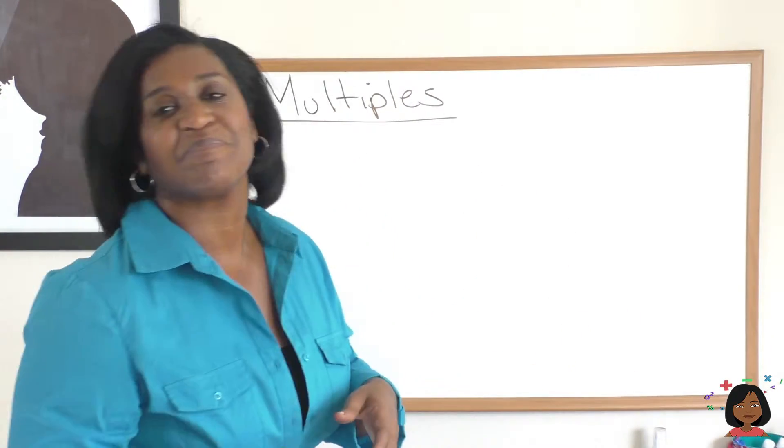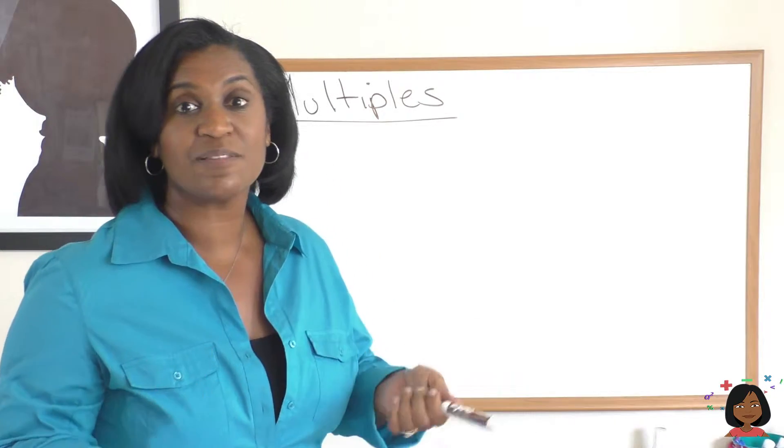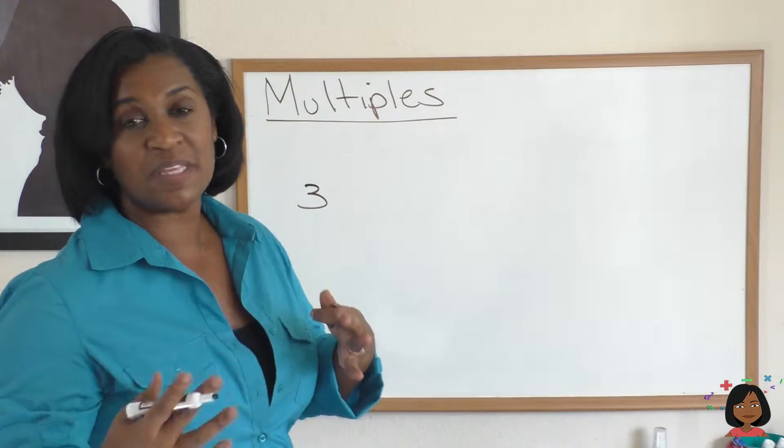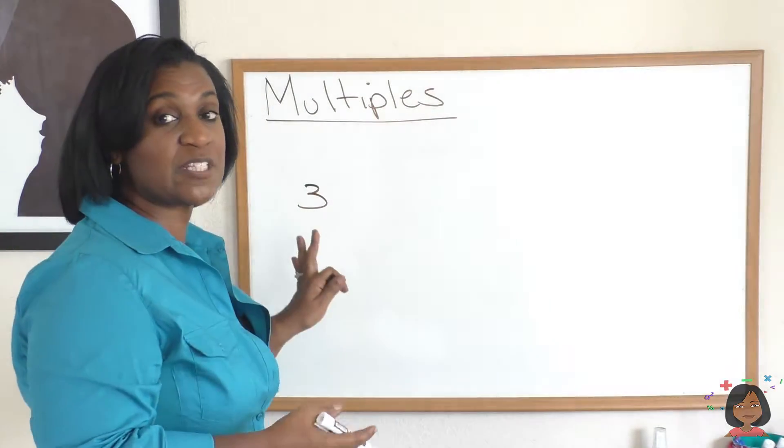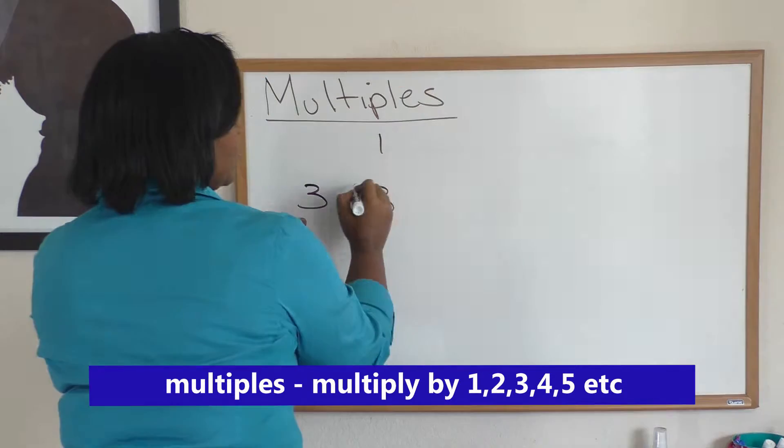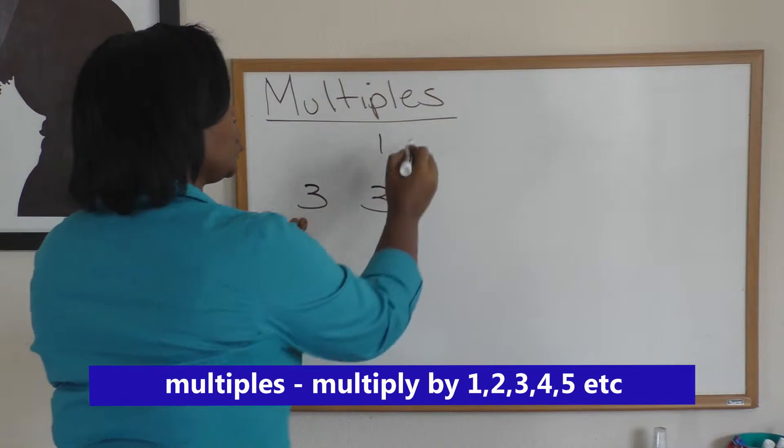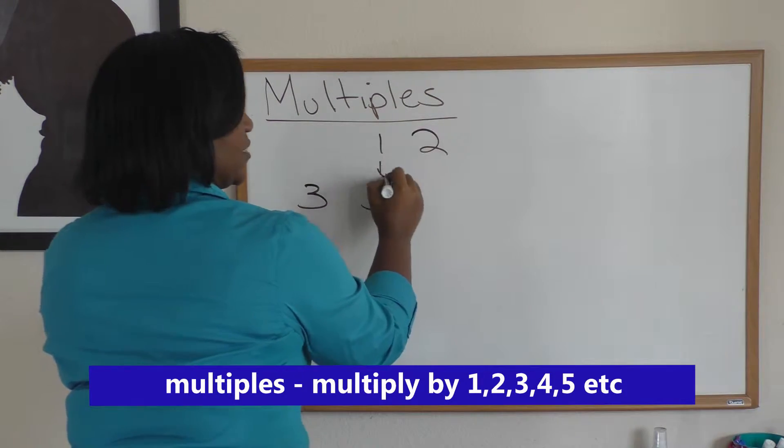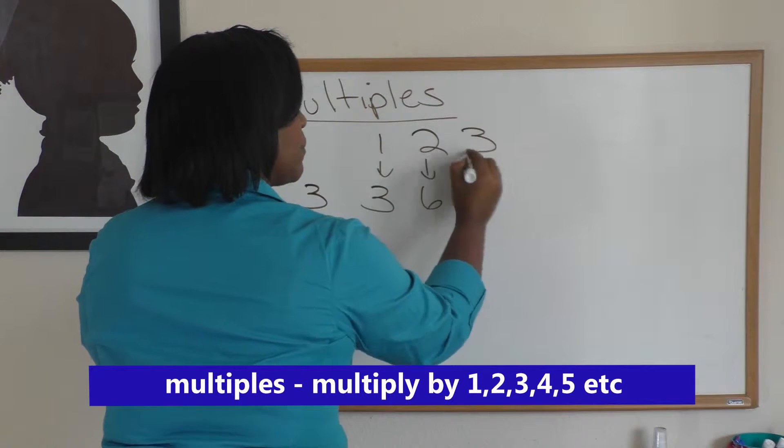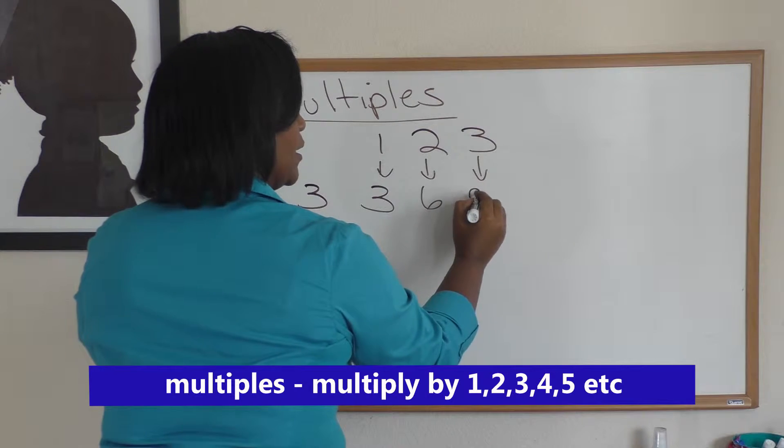Here's what I mean. If I was asked to find the multiples of three, I start with three, and essentially what it means is first multiply three times one, which would be three, multiply three times two, which would be six, multiply three times three, hopefully you're seeing the pattern, which would be nine.